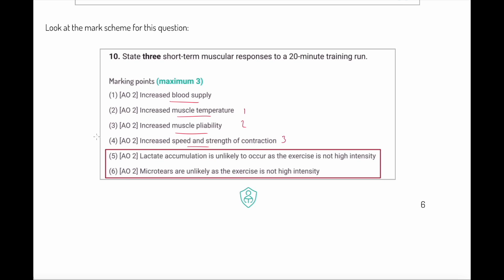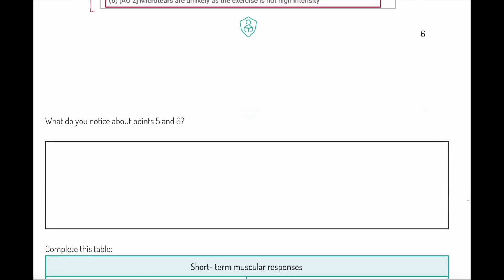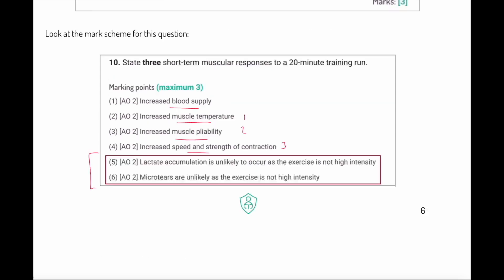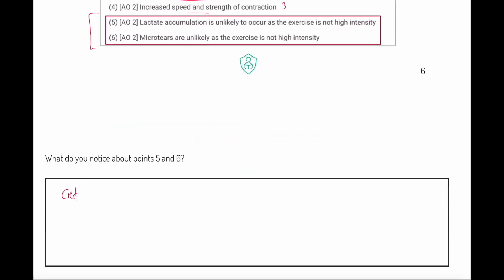I want us to focus here. What do you notice about points five and six? Points five and six tell us lactate accumulation is unlikely to occur because it's not high intensity, and micro tears are unlikely as the exercise is not high intensity. Sometimes you will get credit for what we call the negative. You can sometimes get credit for saying what something is not.